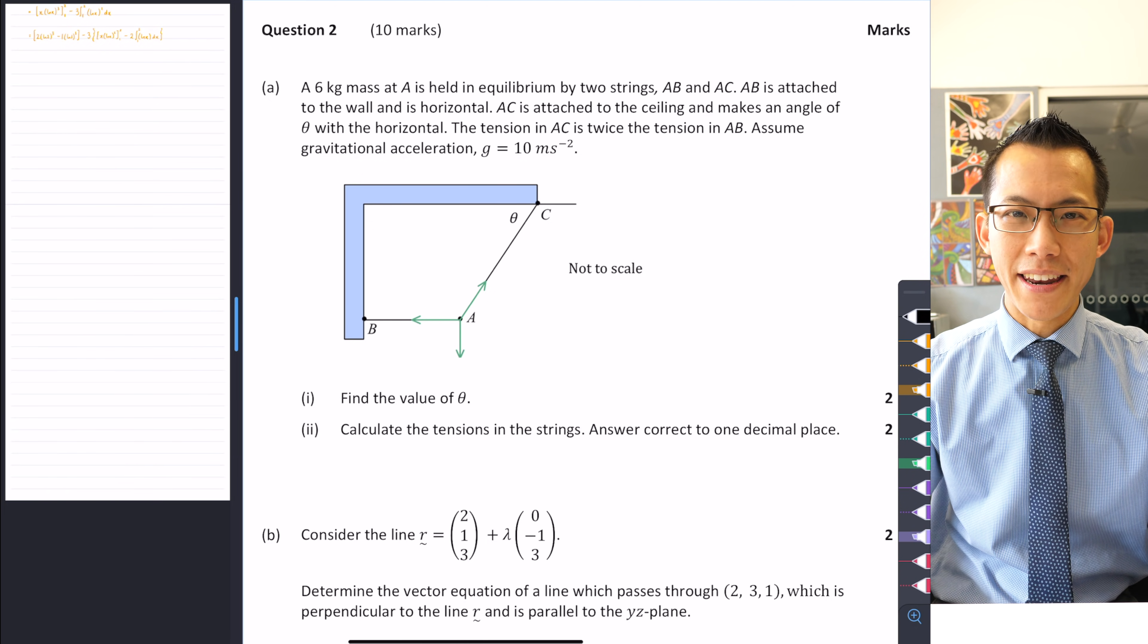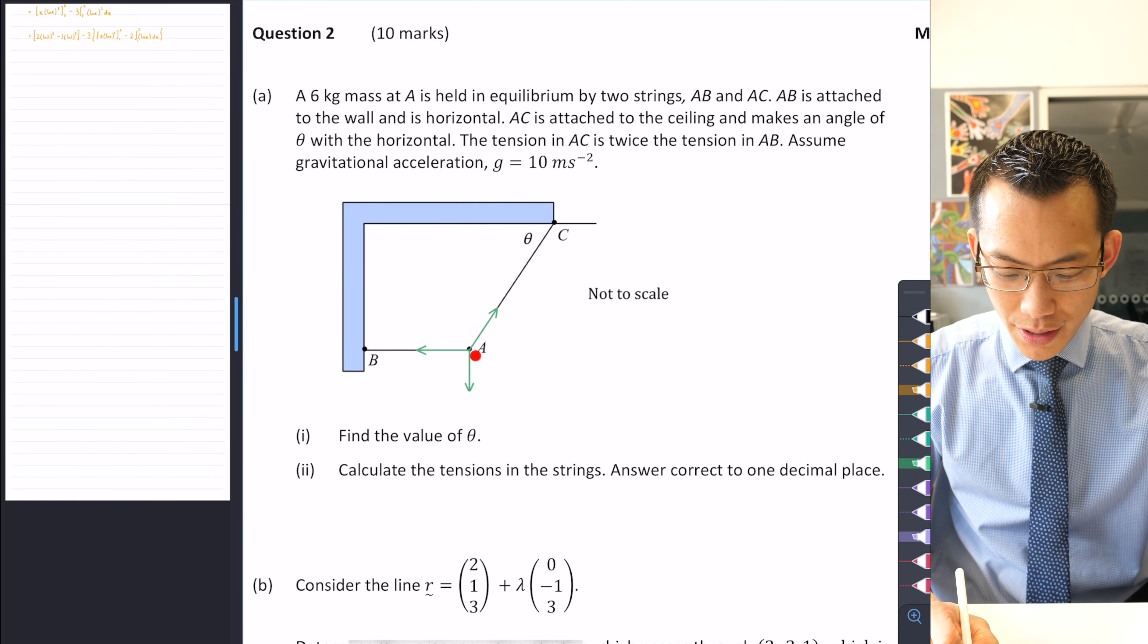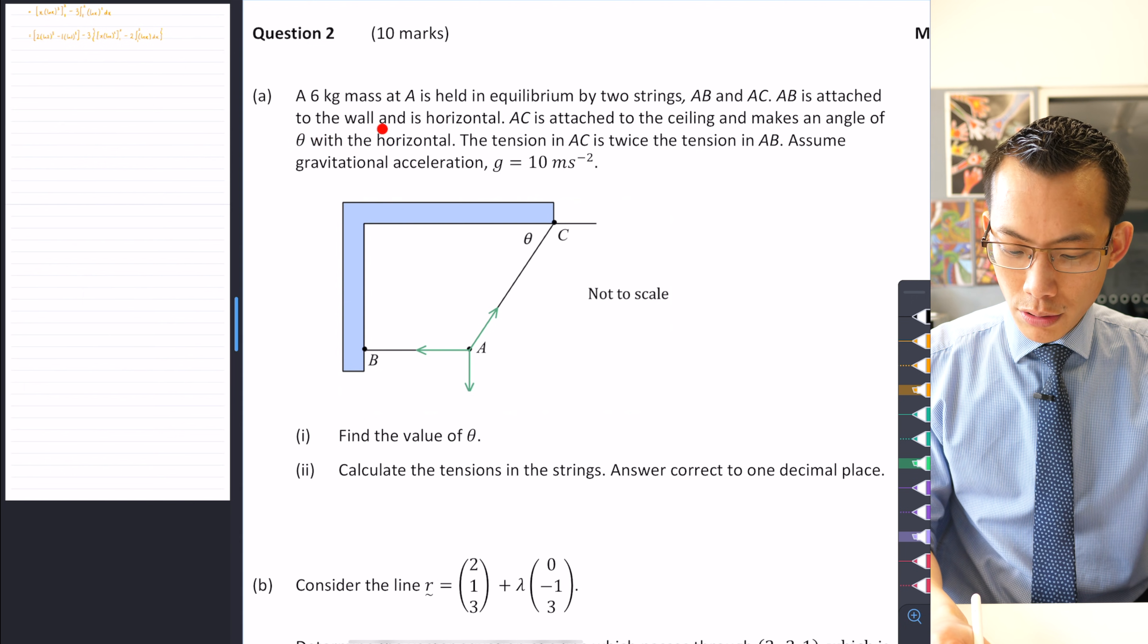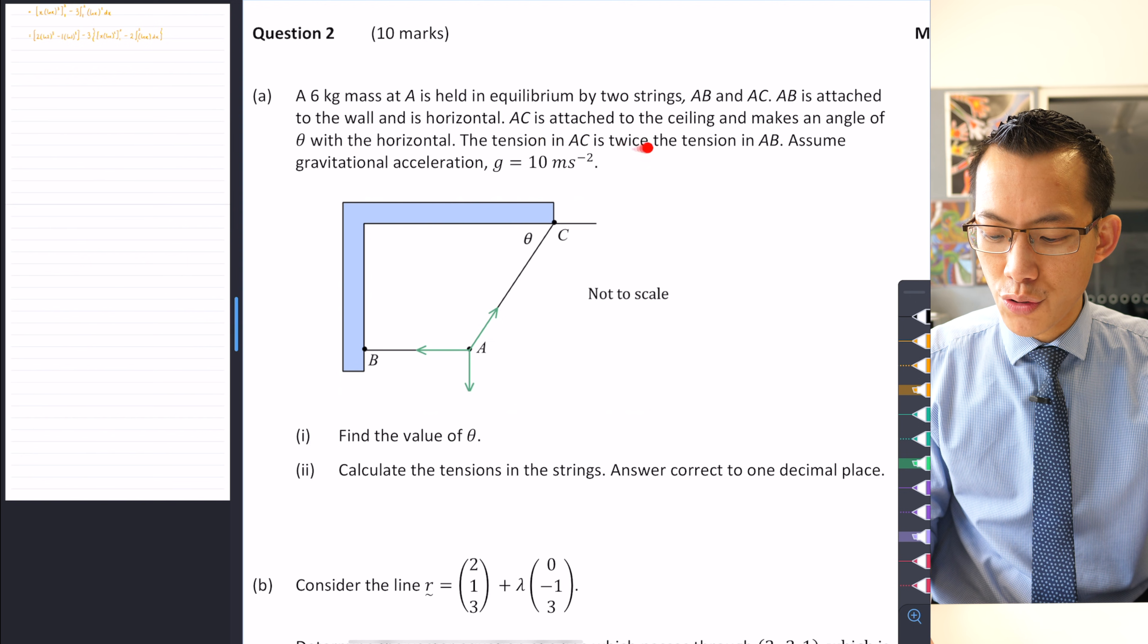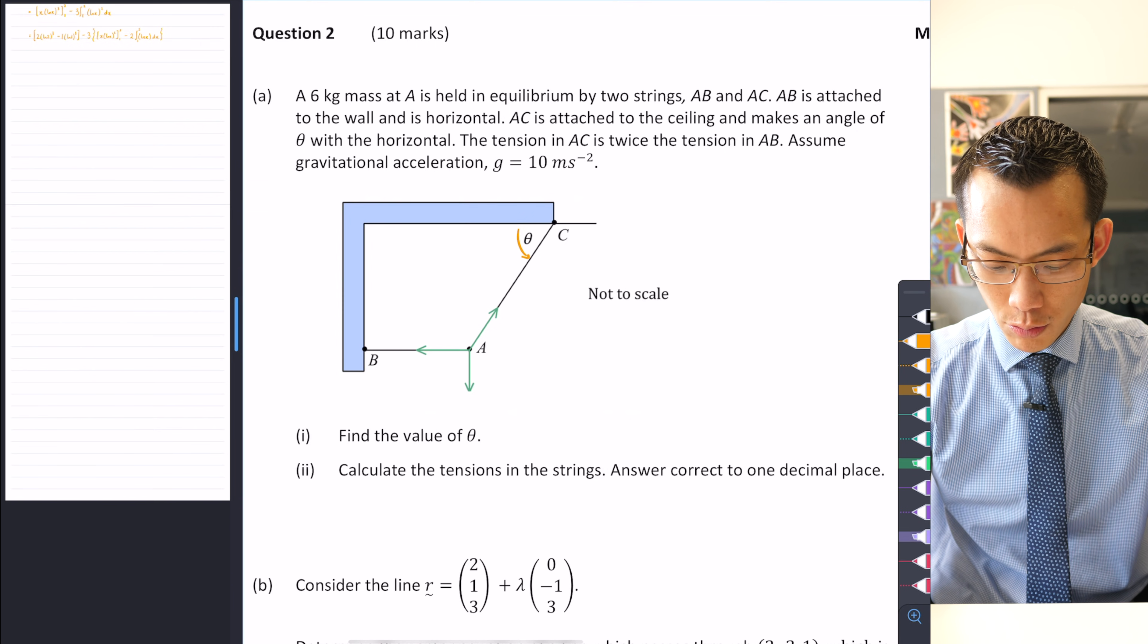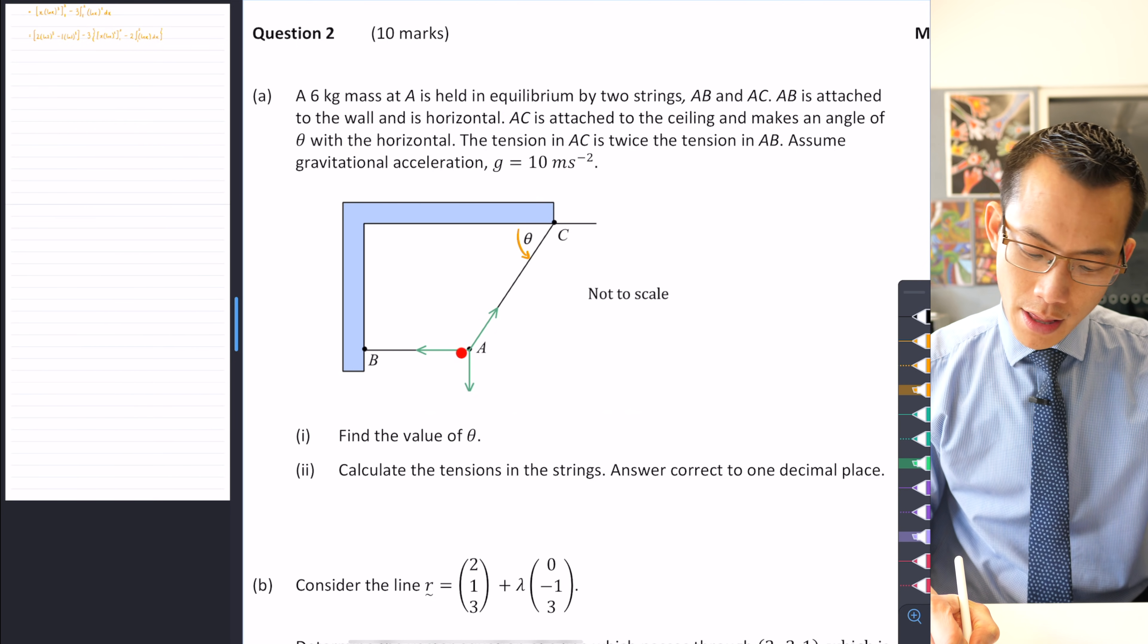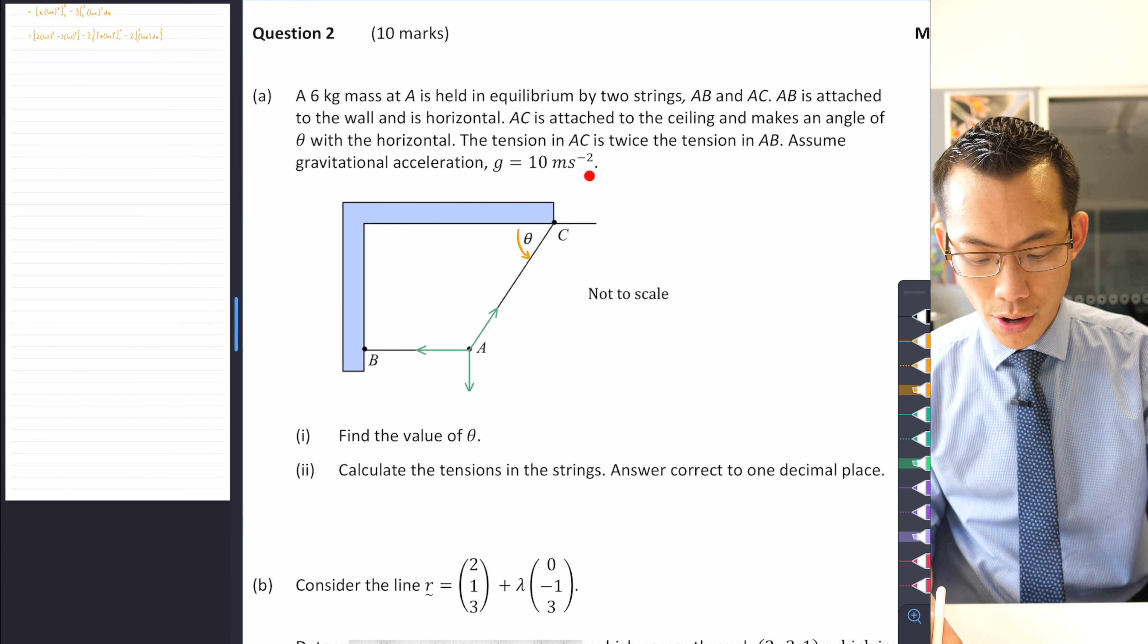This next question comes under the topic of mechanics, so let's have a look at the details together. A six kilogram mass at A is held in equilibrium by two strings, AB and AC. AB is attached to the wall and is horizontal. AC is attached to the ceiling and makes an angle of theta with the horizontal. The tension in AC is twice the tension in AB. Assume gravitational acceleration g of 10 meters per second squared.